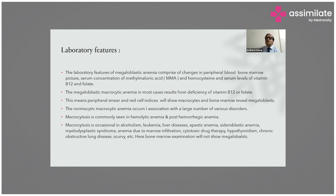Laboratory features of megaloblastic anemia comprise changes in the peripheral blood and bone marrow picture, and serum concentrations of methylmalonic acid (MMA) and homocysteine, and serum levels of B12 and folate. Megaloblastic macrocytic anemia in most cases results from deficiency of B12 and folate, so peripheral smear and red cell indices show macrocytes and the bone marrow reveals megaloblasts.